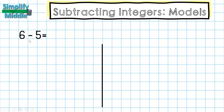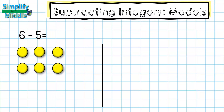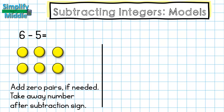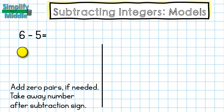I've given an easy example — 6 minus 5, which we all know is 1 — just to work through how to do this with counter chips and number lines. So the first thing I would do for counter chips is show what is given, which is positive 6, so I put 6 yellow chips. What this means is I'm going to take away 5 positive chips. I already have enough that I could take away 5, so I won't need to add zero pairs. I'll add zero pairs if needed, then take away the number after the subtraction sign. So I'm going to box around my 5 yellow tiles and take them away. What's left is my answer: positive 1.